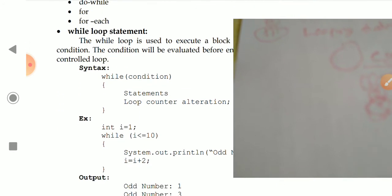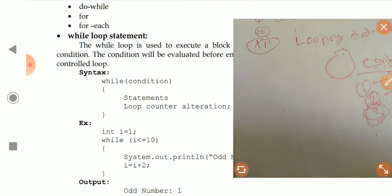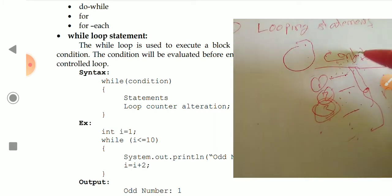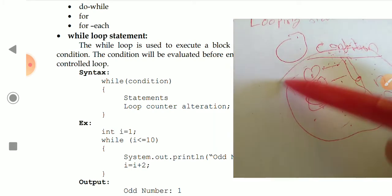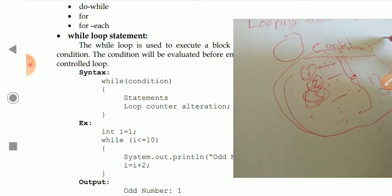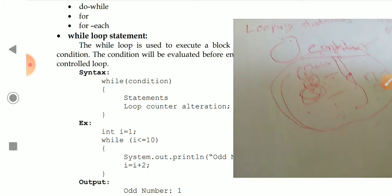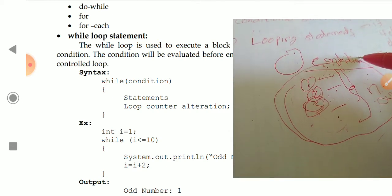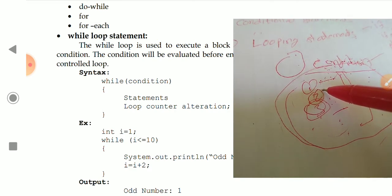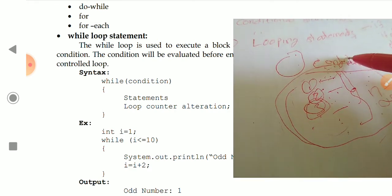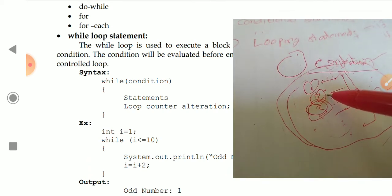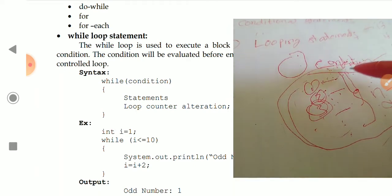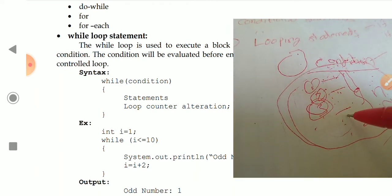The while loop is a looping statement used to execute a block of statements repeatedly as long as the given condition is true. There is one test condition: whenever the test condition is true, we execute the statements. Then the test is evaluated again; if still true, we execute the loop again. These statements inside the braces are called the loop block or looping statements.